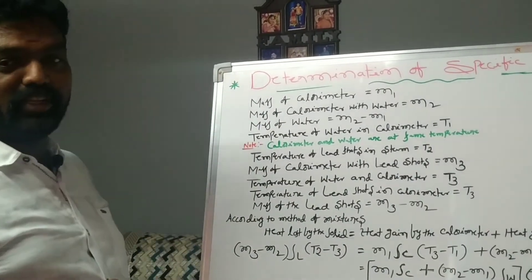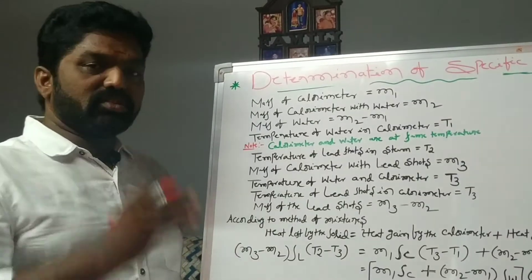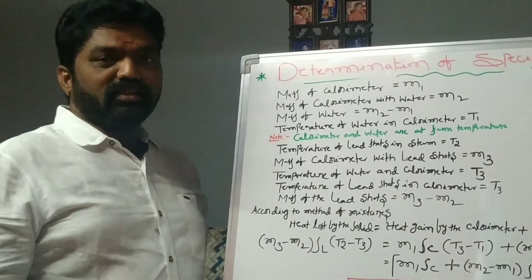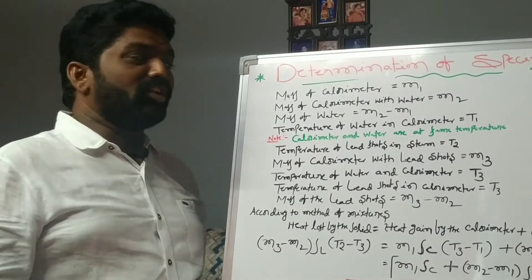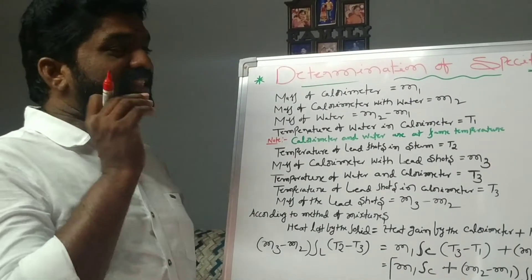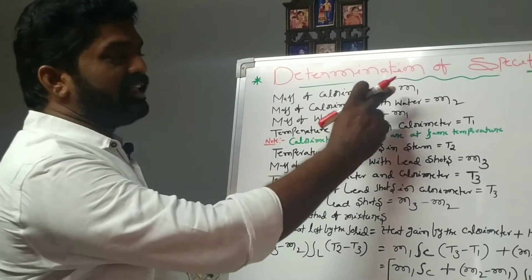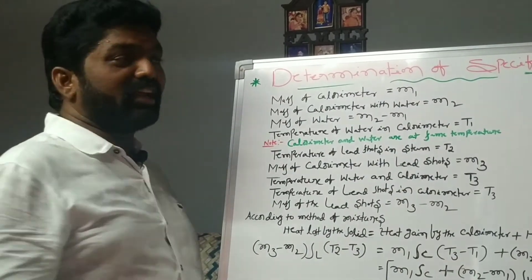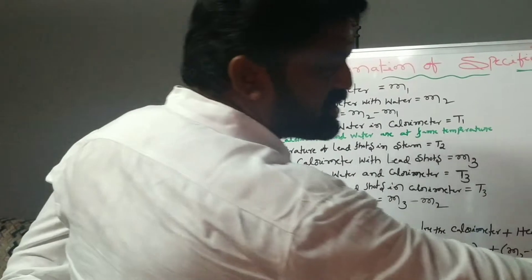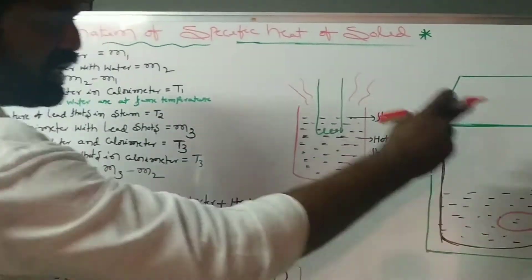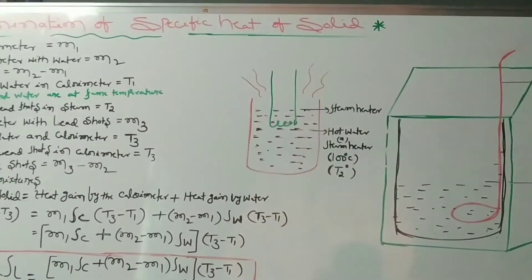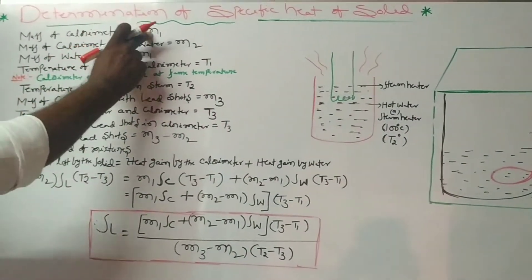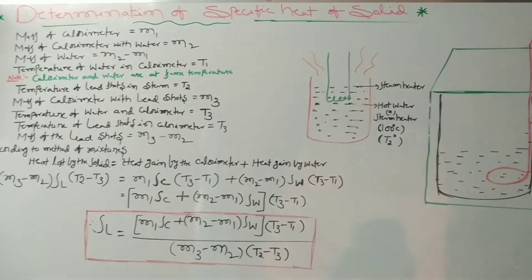These are the required materials for this activity. First of all, take a calorimeter and measure the mass of the calorimeter with stirrer. Consider that mass as m1 grams. This stirrer is used to stir the components.